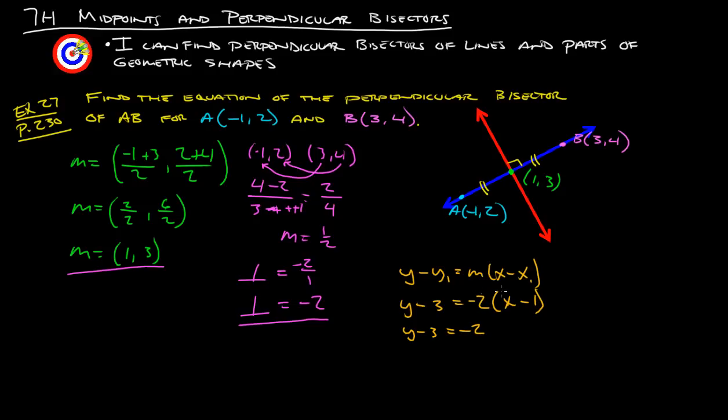We get y - 3 = -2(x - 1). We distribute this 2 through and we get -2x + 2, so we add 3 to both sides, and we get that our equation is y = -2x + 5. And that is the equation of the perpendicular bisector of AB.